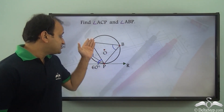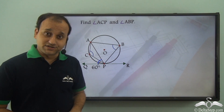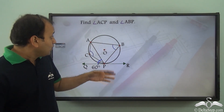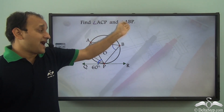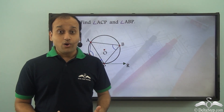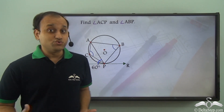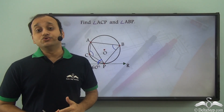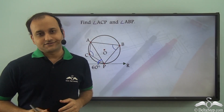Here we have a circle, and within this circle, we have some angles. We need to find angle ACP and angle ABP. To do this, we will have to use a certain theorem of circles.